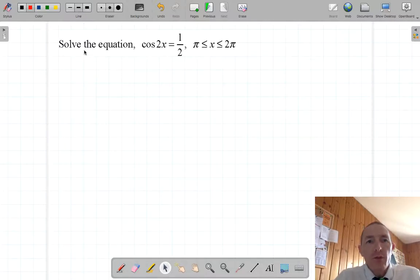Okay, I'm going to go with this question. We're going to solve the equation cosine 2x equals a half, and we've got a nice domain here for x. So the first thing I want to do, I should let you know, this is probably a non-calculator question.